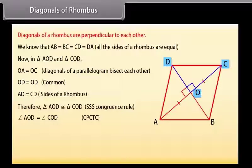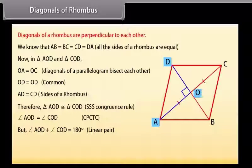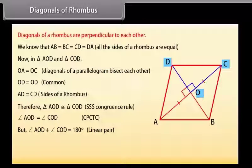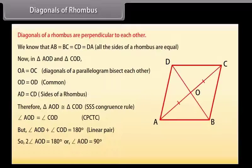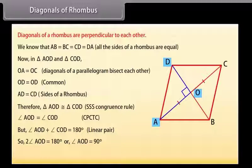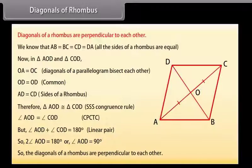By SSS congruence rule, triangle AOD is congruent to triangle COD. This gives angle AOD = angle COD. But angle AOD + angle COD = 180 degrees (linear pair). So 2 × angle AOD = 180 degrees, giving angle AOD = 90 degrees. So the diagonals of a rhombus are perpendicular to each other.